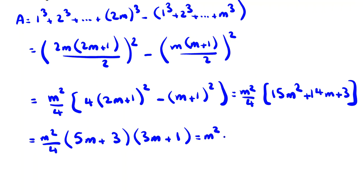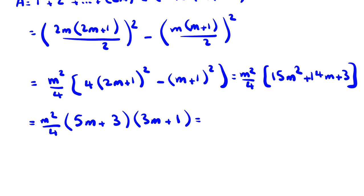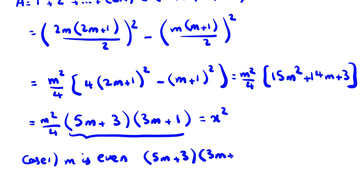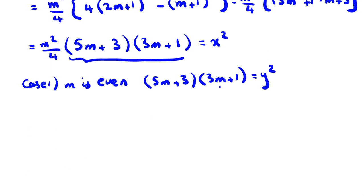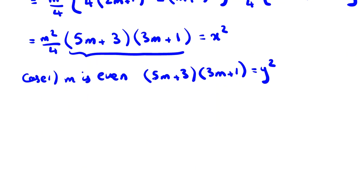Now we have m² times something. We have two options: m is even or m is odd. Case 1: m is even. Because m is even, this part should be a perfect square. So (5m+3)(3m+1) is a perfect square. When you have product of two terms that equals perfect square, one of the most important ideas is to consider the gcd.